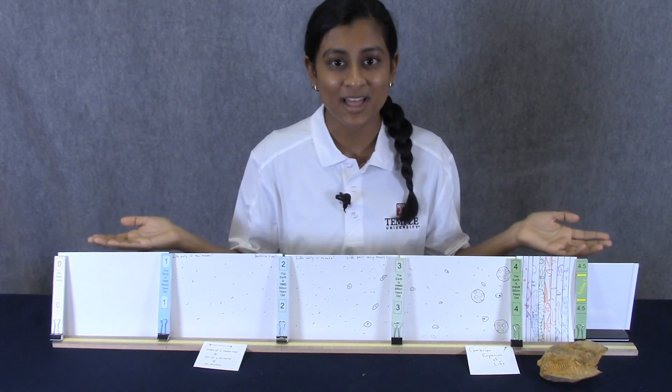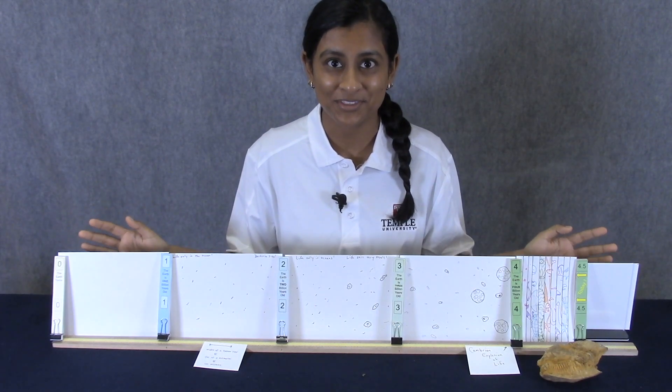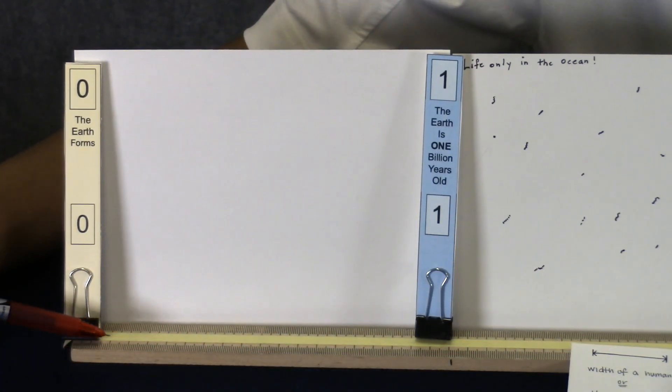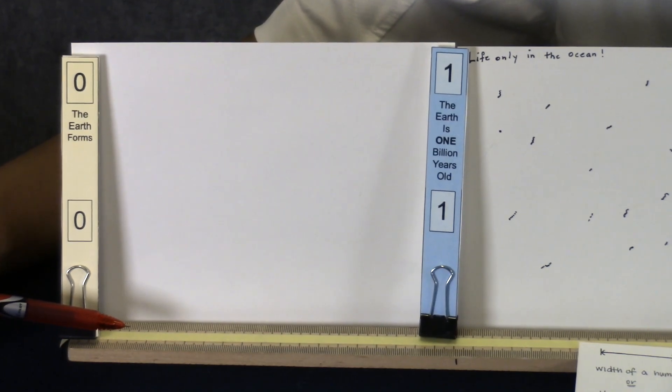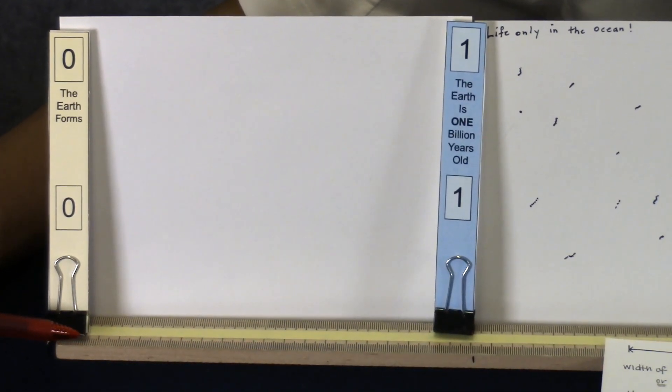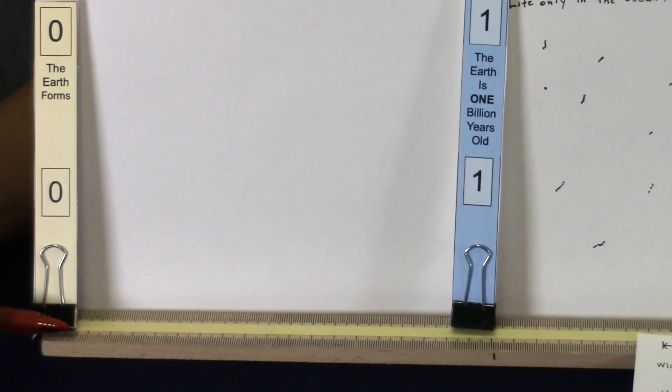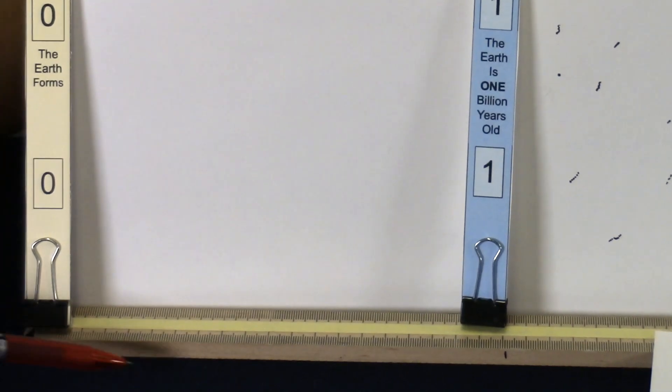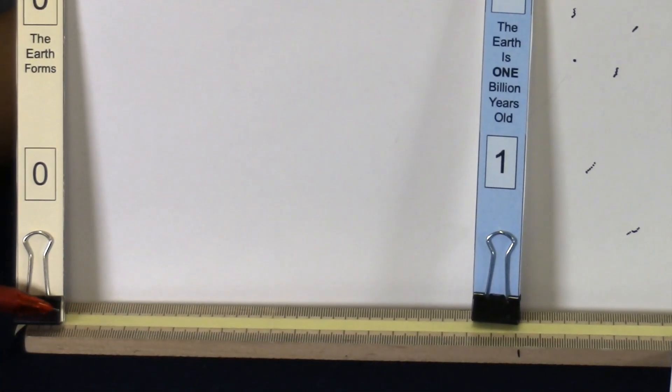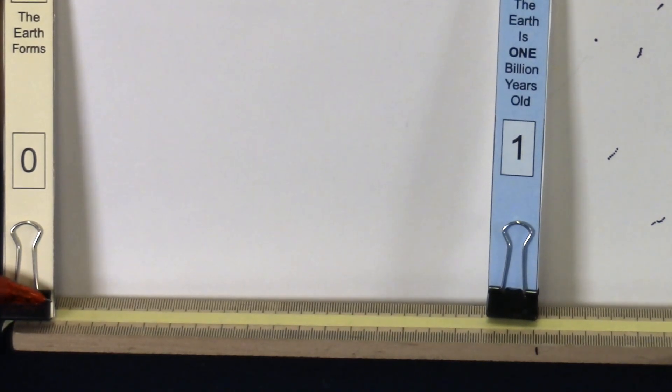Take a look at this timeline that we made to help you understand just how old our Earth is. We've zoomed in so you can see our timeline just a little bit closer. Each tiny line you see here is one millimeter, and one millimeter represents five million years of time. In this first portion right here, we have 200 millimeters, which represents one billion years.